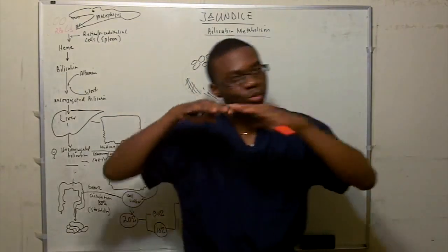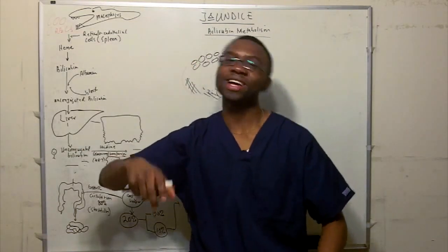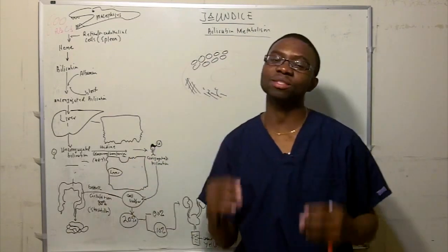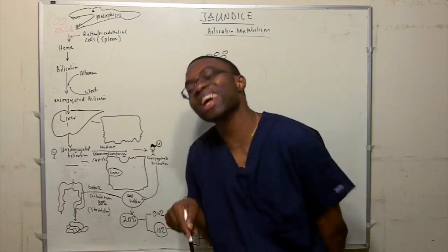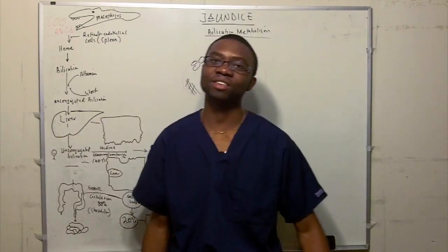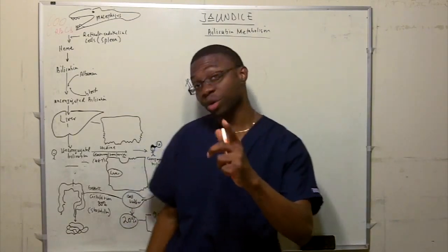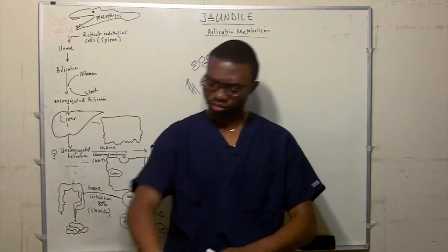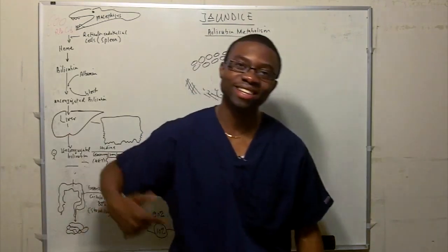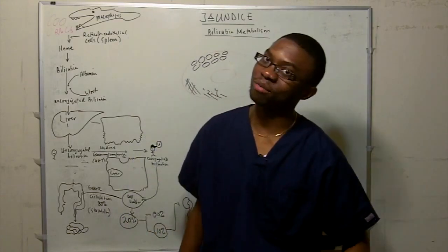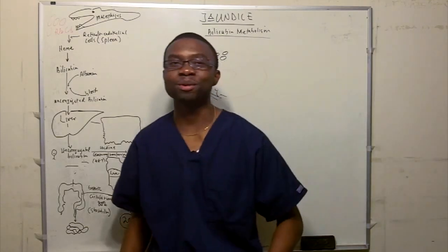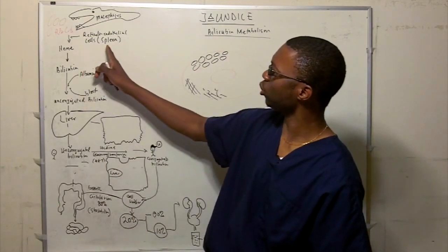Eventually these aging red blood cells end up in the spleen — that's their graveyard. Inside the spleen, macrophages are waiting. In medicine, macrophages get different names depending on location: reticuloendothelial cells in the spleen, Langerhans cells under the skin, type 2 pneumocytes in the lungs, and glial cells or astrocytes in the brain. But it's the same cell with a different label.